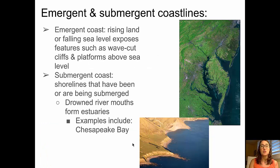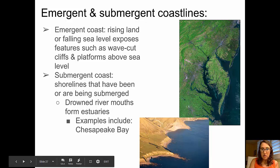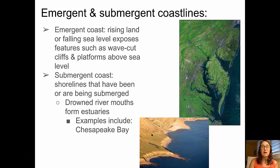Emergent coastlines result from rising land or falling sea level, which exposes wave-cut cliffs, platforms, and marine terraces above sea level. A photo shows narrow wave-cut platforms in a bay, active cutting of a wave-cut cliff, and a former platform now elevated as a marine terrace. Submergent coastlines form when shorelines are submerged, commonly seen as drowned river valleys forming estuaries. Chesapeake Bay is a great example — river channels once flowed to the Atlantic, but rising sea level drowned those valleys and formed the bay.